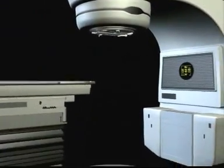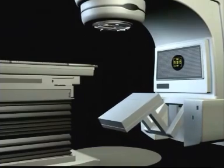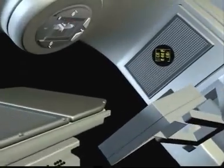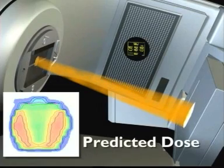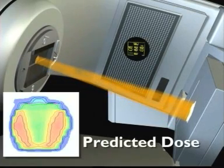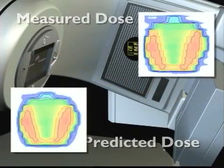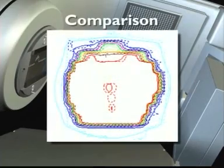IMRT treatment delivery is verified using Varian's portal vision system mounted on a robotic arm. The IMRT field is delivered without the patient. The predicted dose from the Eclipse Helios Treatment Planning System is compared with the measured dose from portal vision. Different tools permit the analysis and comparison of the two dose matrices.